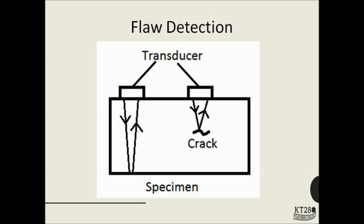The next application is flaw detection, which may look similar to echo sounding. Here we have a specimen, say a metal slab, to be tested. A transducer is placed on its surface and moved along its length. Where there is no crack, the ultrasound travels through the specimen, reflects from the other side, and returns to the transducer. The time for this round trip is measured. When the transducer moves over a crack, the sound reflects from the crack itself, resulting in a smaller time interval — and in this way the crack is detected.